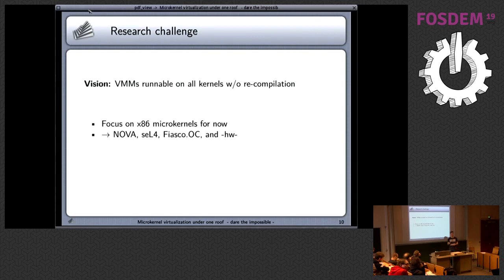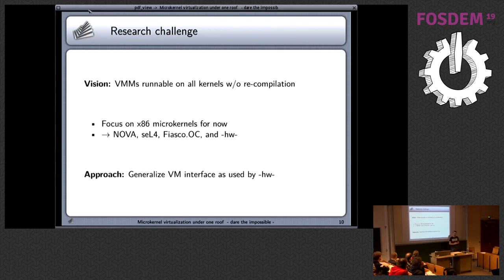We decided to focus on microkernels first, then on x86, because that cross-cut is the biggest, leaving out Linux KVM for the moment. The approach is to take the interface from our own kernel — where we have good experience on ARM and with the MUEN separation kernel — and extend it to also support Nova, seL4, and Fiasco OC.